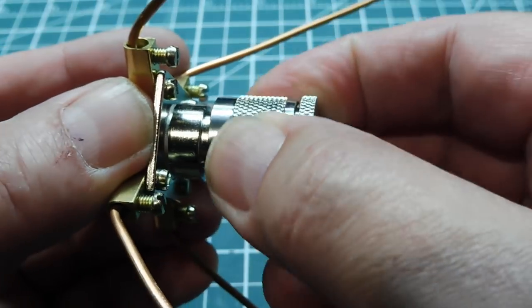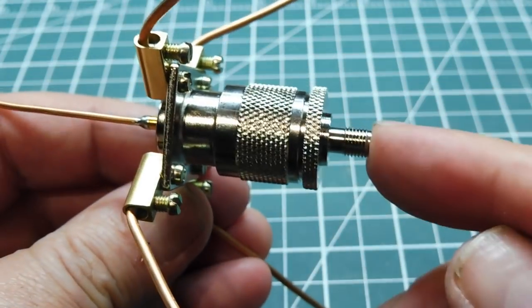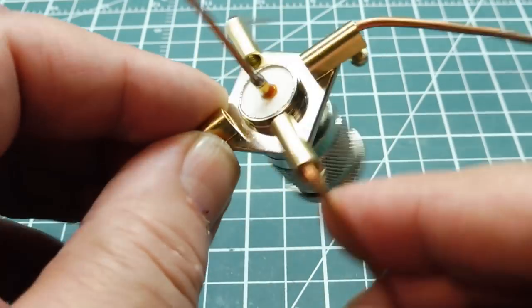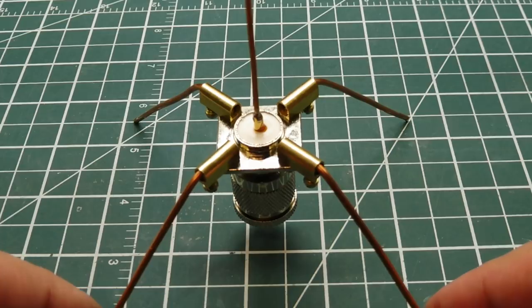And you just attach that to the bottom of the antenna, and then attach the cable from here to your LoRa module. And then you've got yourself a little quarter wave monopole antenna.